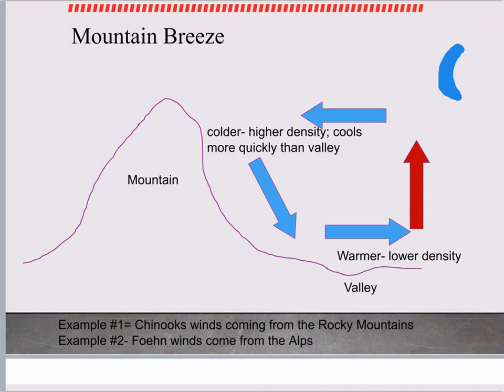We have two examples: the Chinook winds coming from the Rocky Mountains, and the Foehn winds coming from the Alps.